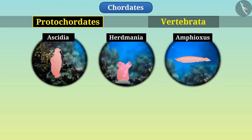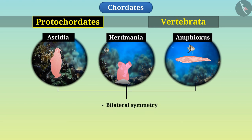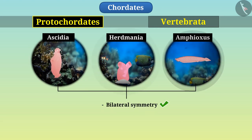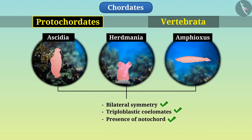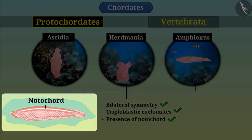Their bodies have bilateral symmetry. They are often marine creatures. They are triploblastic coelomates. But their main feature is the presence of notochord, which are long rod-like structures found on the back of animals.